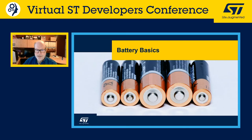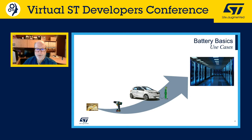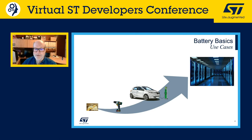Let's examine some foundational concepts. According to Wikipedia, a battery is a device consisting of one or more electrochemical cells with external connections for powering electric devices like flashlights, mobile phones, and electric cars. Historically, the term "battery" specifically referred to a device composed of multiple cells, but usage has evolved to include devices with a single cell.